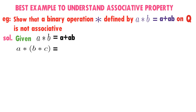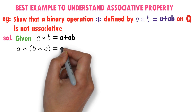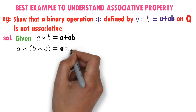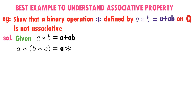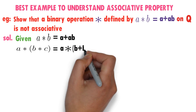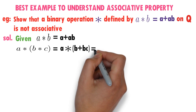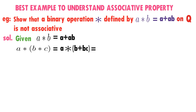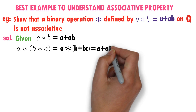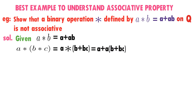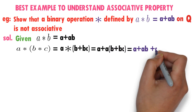Now I will calculate a★(b★c). How is b★c defined? First element plus product of the two elements — that is b + bc. Now observe the star operation again. The first element is a, so we write a + a(b + bc), which simplifies to a + ab + abc.